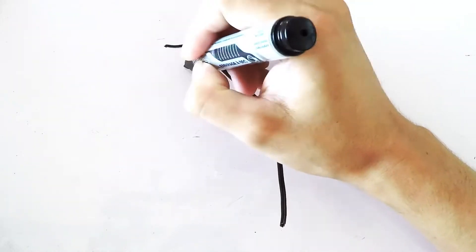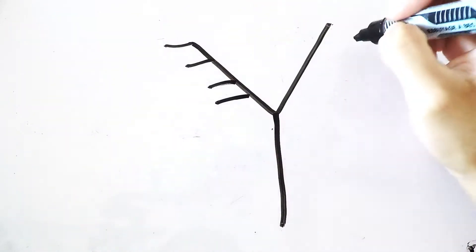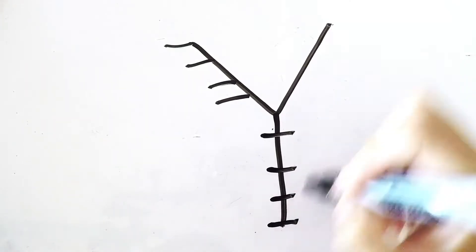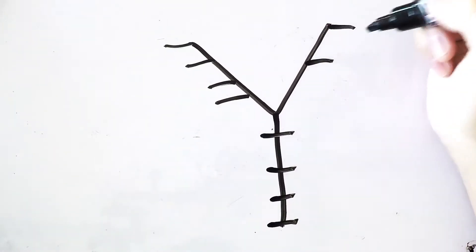So once you have the Y you're going to make four lines on the left, four lines on the bottom, and two lines on the right.